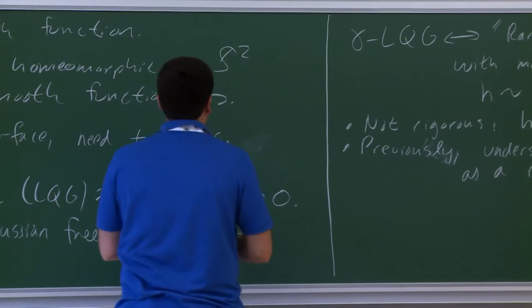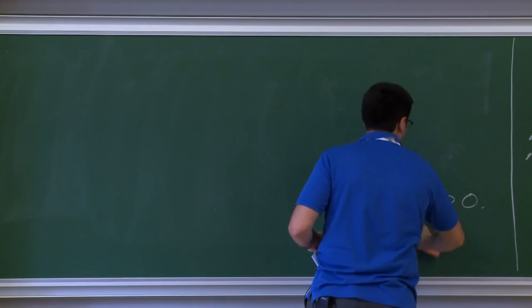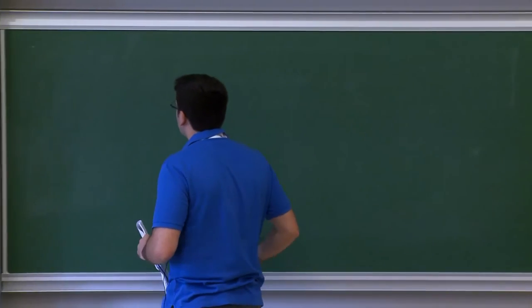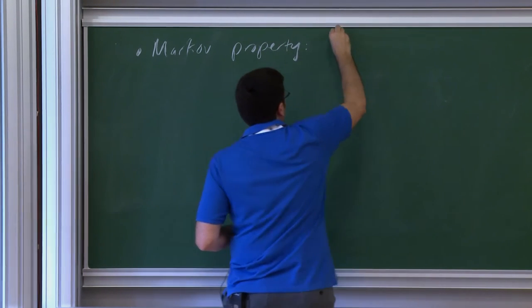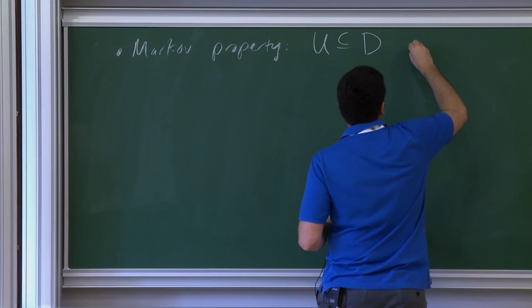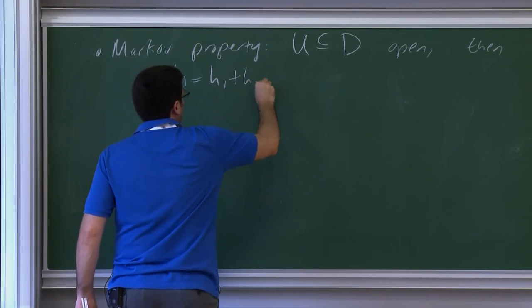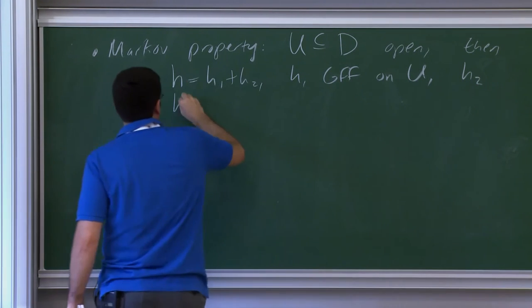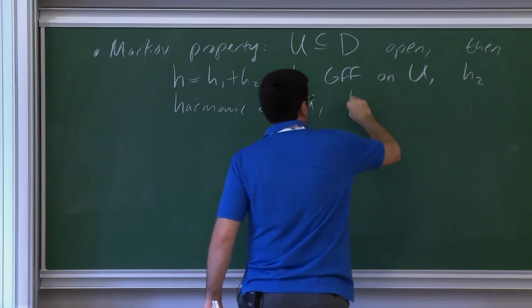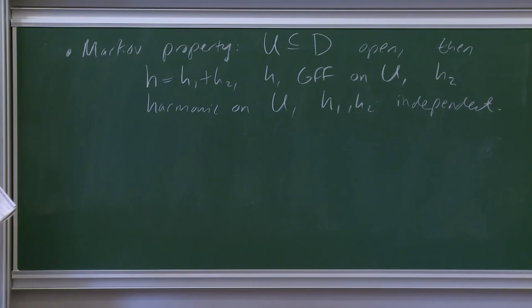The last relevant property is the spatial Markov property of the Gaussian free field: if U is a subdomain of D, then you can write H = H₁ + H₂, where H₁ is a GFF on U, H₂ is harmonic on U, and H₁ and H₂ are independent. These are the basic properties of the GFF that we're going to be using.